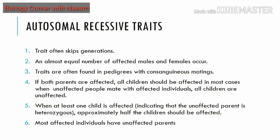Now we can discuss some modes of inheritance that can be distinguished on the basis of pedigree analysis. First of all, a trait can be an autosomal trait or an X-linked trait — you can also use the term sex-linked trait. Autosomal traits have genes present on autosomes, while sex-linked traits have genes present particularly on the X chromosome.